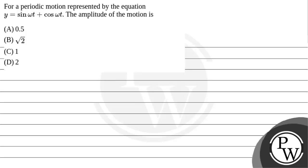Hello. Let's read the given question. The question states that for a periodic motion represented by an equation y equal to sin(ωt) plus cos(ωt), the amplitude of the motion is — and the options are given below.